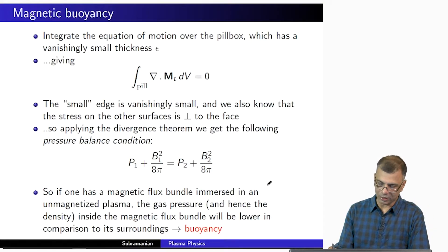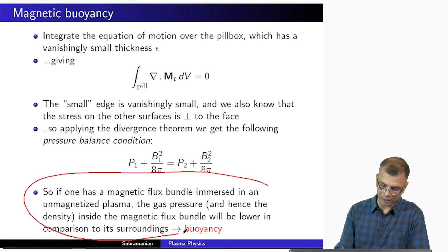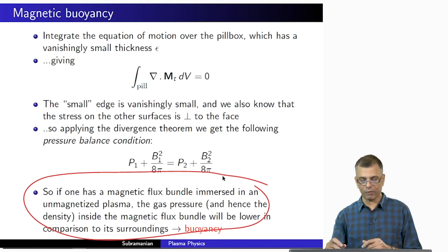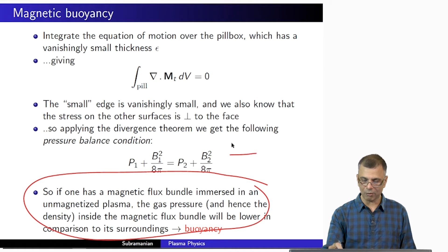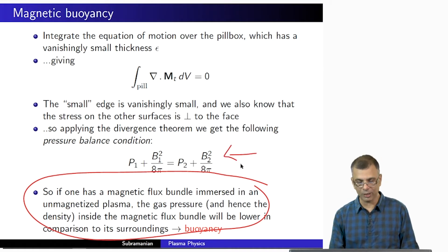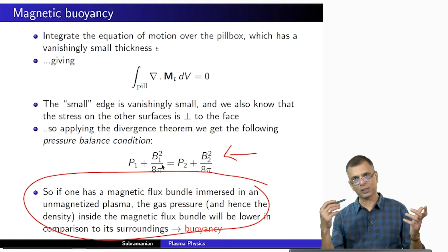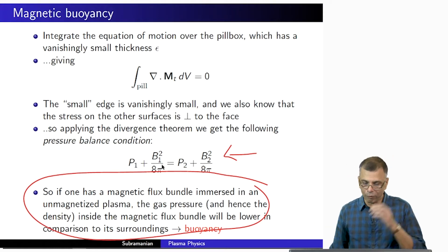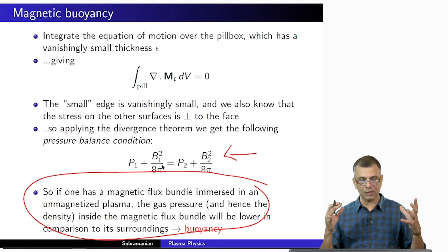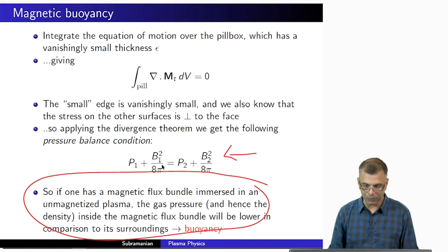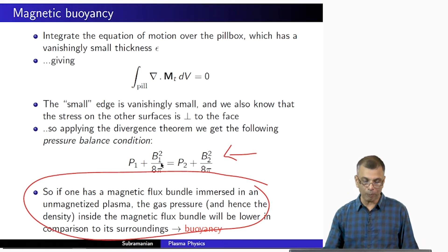This is the consequence of magnetic buoyancy. It is a direct consequence of the pressure balance condition — the fact that the gas pressure plus the magnetic pressure has to be constant. So, if you have a magnetic flux bundle immersed in an unmagnetized plasma, the gas pressure and hence the density inside the magnetic flux bundle will be lower in comparison to its surroundings.